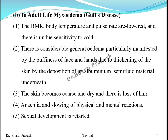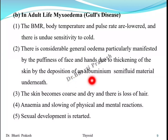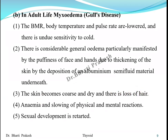In adult life, hyposecretion leads to Gull's disease or myxedema. The BMR, body temperature, and pulse rate are all lowered, and there is undue sensitivity to cold. There is considerable general edema, particularly manifested by puffiness of the face and hands, due to thickening of the skin by deposition of albuminous semi-fluid material. The skin becomes coarse and dry, and there is loss of hair, anemia, and slowing of physical and mental reactions.